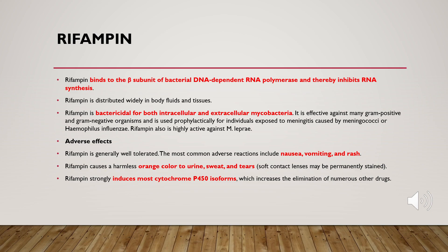Rifampicin is a good antibiotic effective against tuberculosis and other organisms. The most common adverse side effects are nausea, vomiting, and rash. Importantly, rifampicin causes an orange discoloration of sweat and tears.